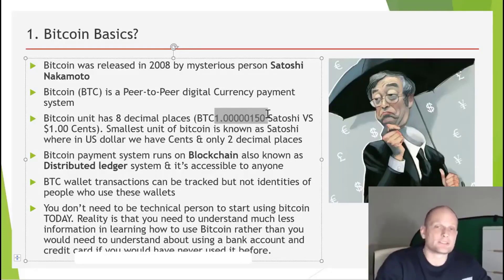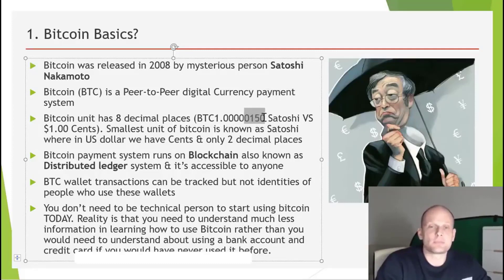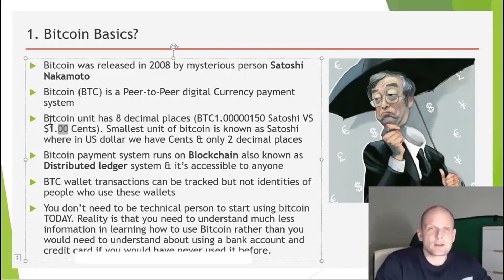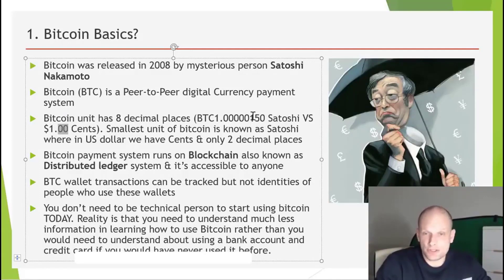One thing to understand here is that Bitcoin has 8 decimal places and the smallest parts of Bitcoin are called Satoshis. In dollars we have only two decimal places and 100 cents; in Bitcoin we have 100 million Satoshis — that's the key difference.